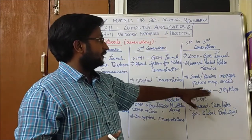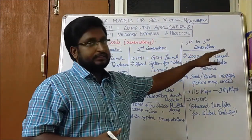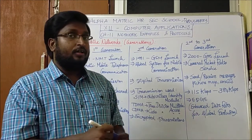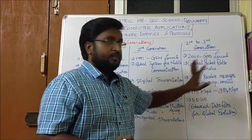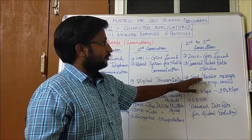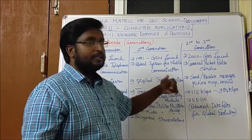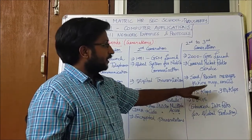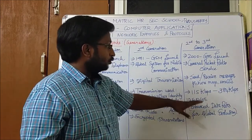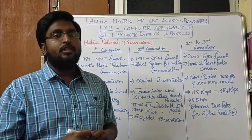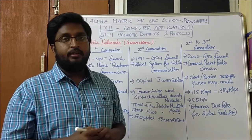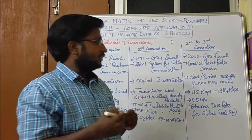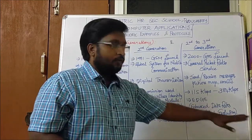In the second-to-third generation, in the year 2000, they developed the GPRS launch — General Packet Radio Service — allowing packets to be transferred via radio waves. This enabled sending and receiving messages, picture messages, emails, and all multimedia messages. The speed ranged from 115 kbps to a maximum of 384 kbps. They also introduced the EDGE technology — Enhanced Data Rate for Global Evolution — the 'E' symbol visible on 2G/3G phones.